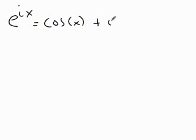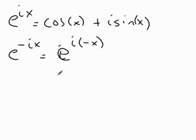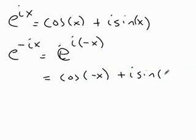But wait, there's more. e to the ix is cosine x plus i sine x. What's e to the negative ix? I can think of that as e to the i times negative x, which is cosine negative x plus i sine negative x.